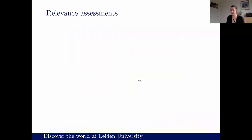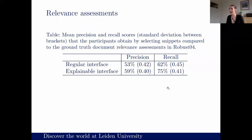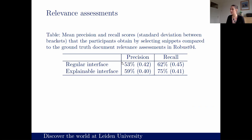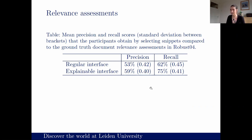Users said the explainable interface was more explainable and better accessible. But we also checked if they were actually better at selecting relevant documents — and there, they weren't, at least not significantly. In the regular interface they obtained precision of 0.53 and recall of 0.62; in the explainable interface the scores seem higher, but the standard deviation is incredibly large — 0.4 on 0.59 — so it's all over the place. This is a small dataset and we definitely need more work here.